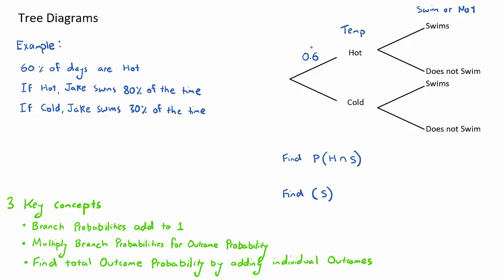I'm not told how many days are cold. However, this is the first key concept: the branch probabilities need to add to one. Every branch that comes out of the same point, when we add up the probabilities, needs to add to one. So this is 0.6 here, this will be 0.4 here, because 0.6 plus 0.4 is equal to one. That's the first one, let's tick that off.